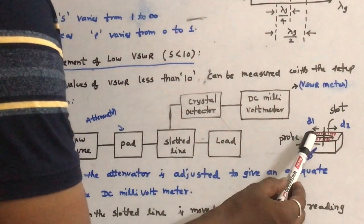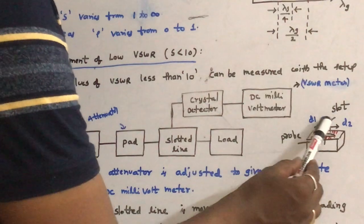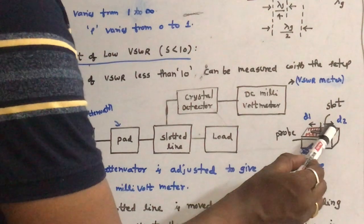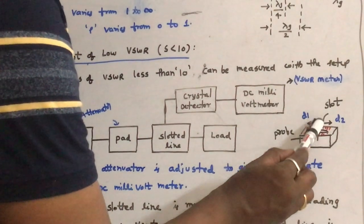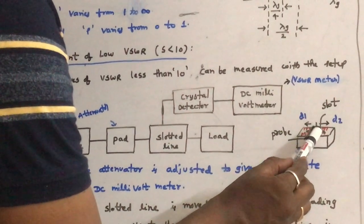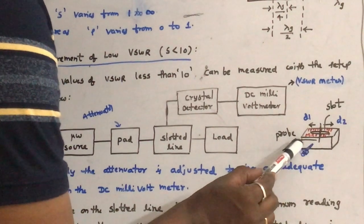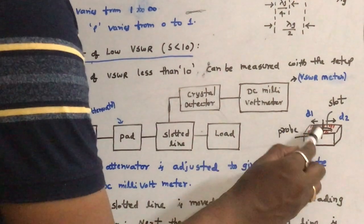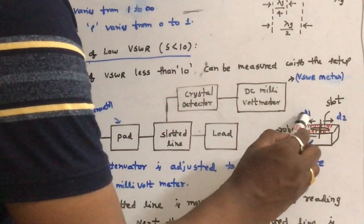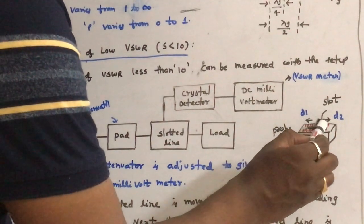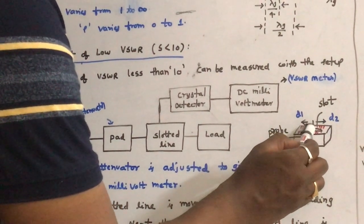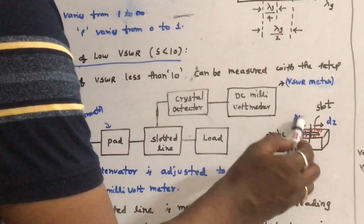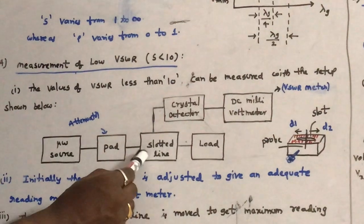The general structure of the slotted line is shown here. A slot is cut along the line, and a vertical probe is inserted into the slot. By adjusting the probe knob — the blue knob shown — we can move the probe towards the right and towards the left on the slotted line. The red markings on the slotted line indicate the position of the probe in millimeters.